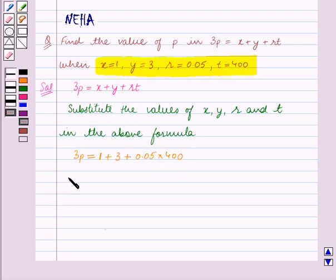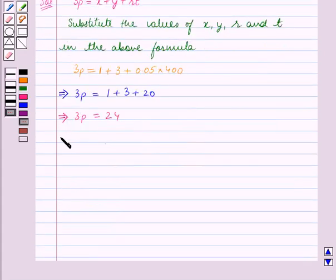So this implies 3p = 1 + 3 + 20, which implies 3p = 24, which means p = 24/3. Therefore, the answer is p = 8.